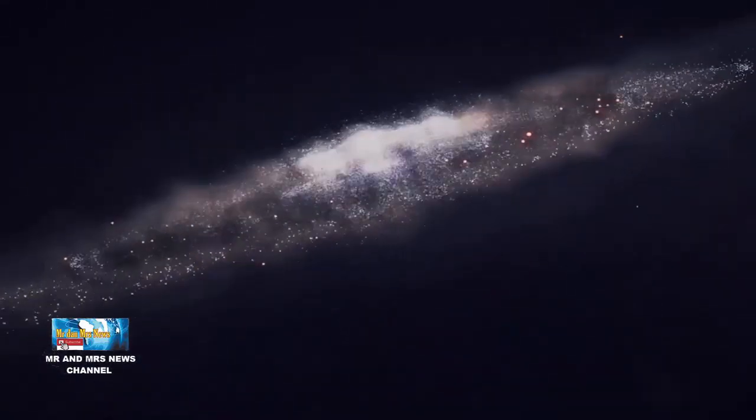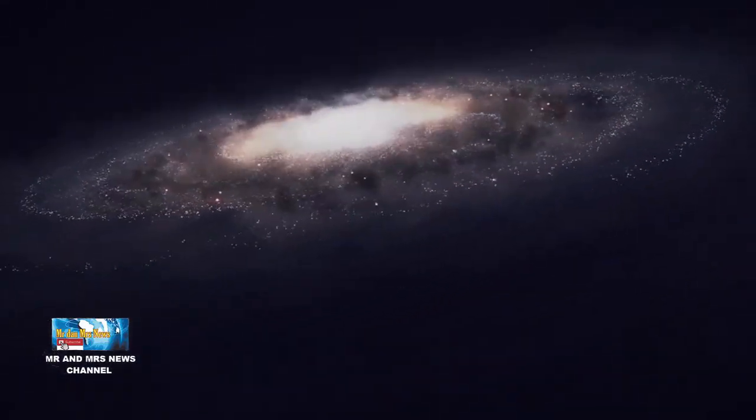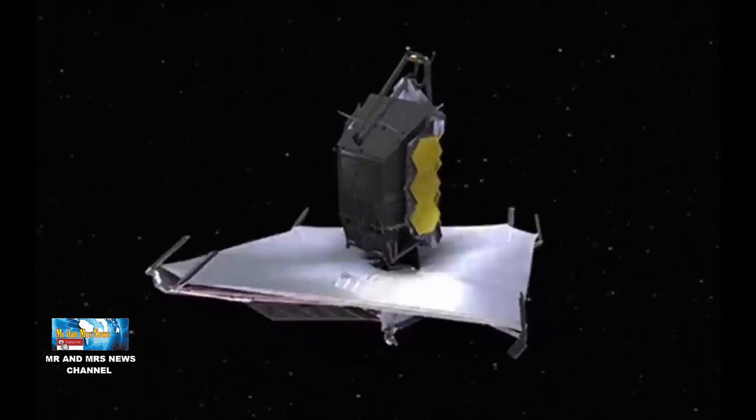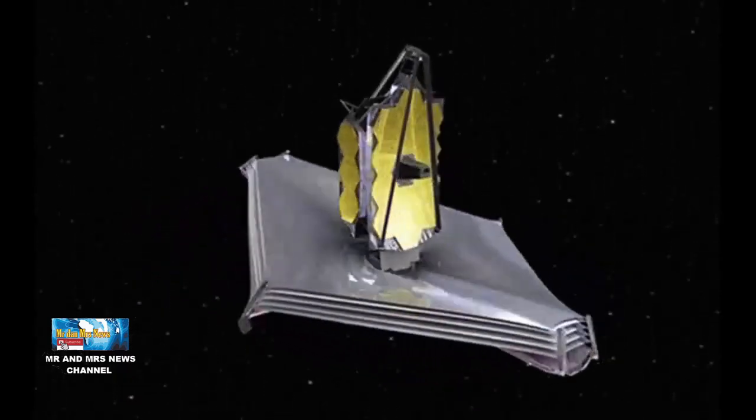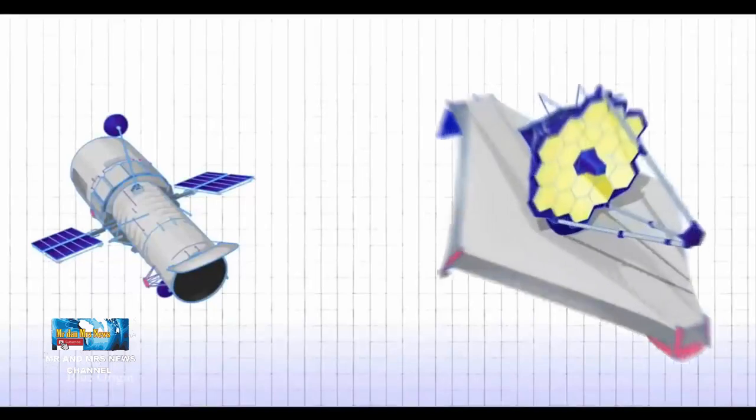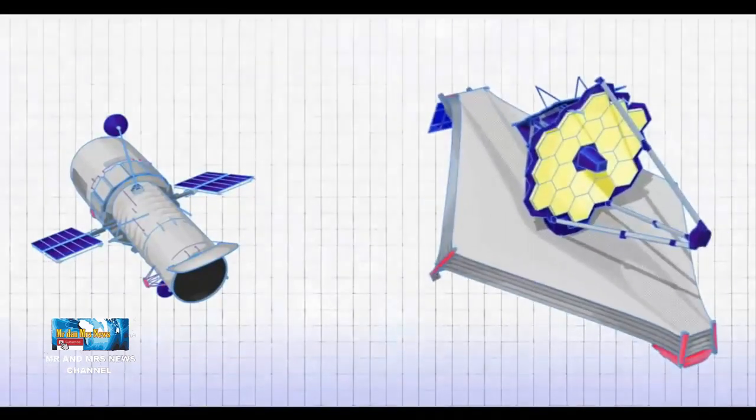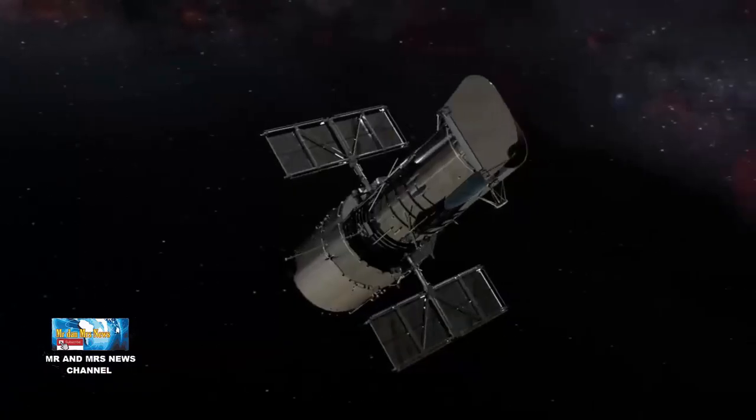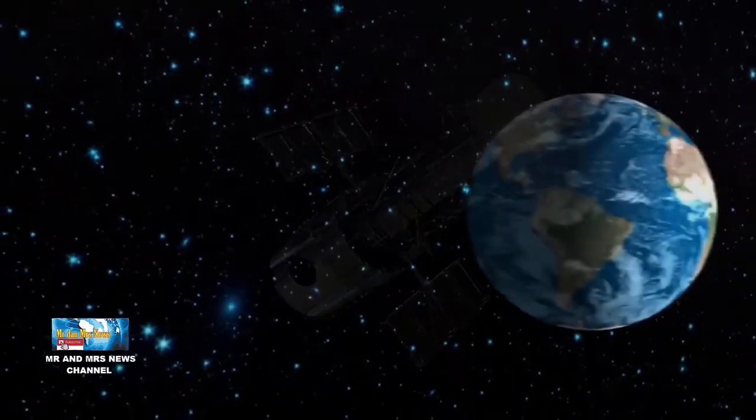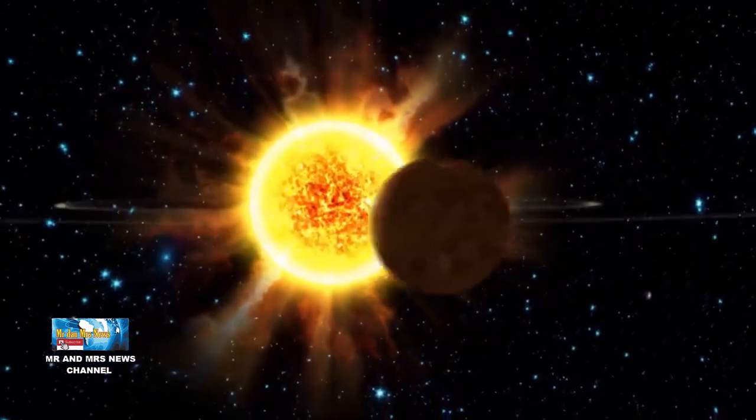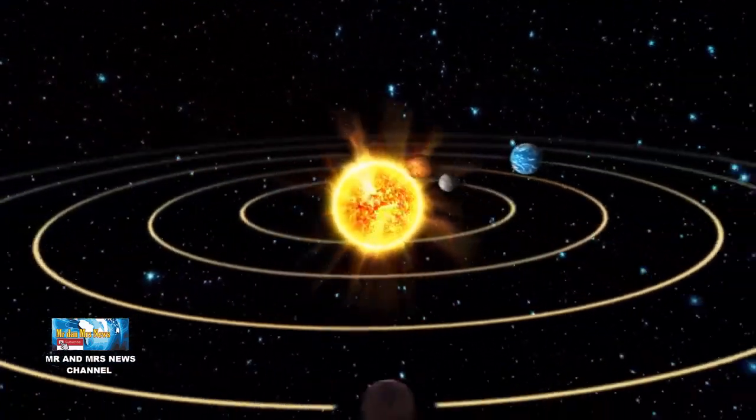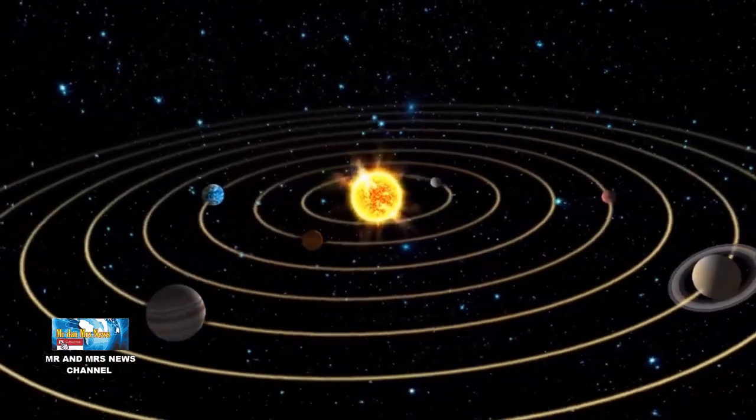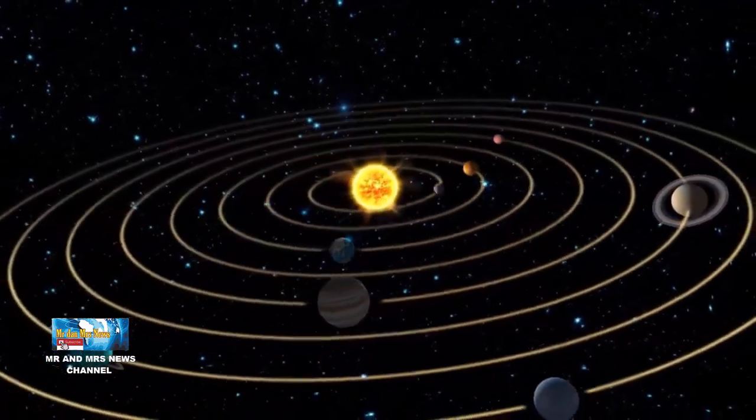Inilah alasan lain mengapa Webb bukan pengganti Hubble. Kemampuannya tidak sama. Webb terutama akan melihat semesta dalam inframerah, sementara Hubble mempelajari terutama pada panjang gelombang optik dan ultraviolet meski ia memiliki beberapa kemampuan inframerah. Webb juga memiliki cermin yang jauh lebih besar daripada Hubble. Area pengumpulan cahaya yang lebih besar ini berarti bahwa Webb dapat mengintip lebih jauh ke masa lalu daripada yang mampu dilakukan Hubble.